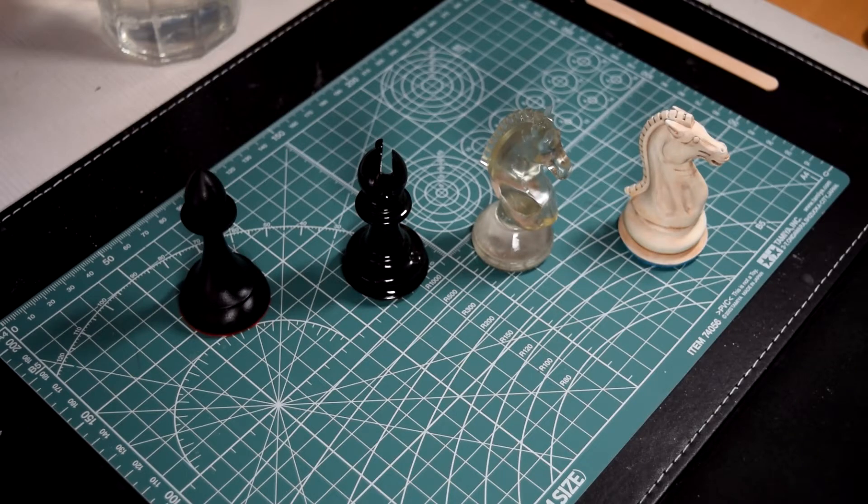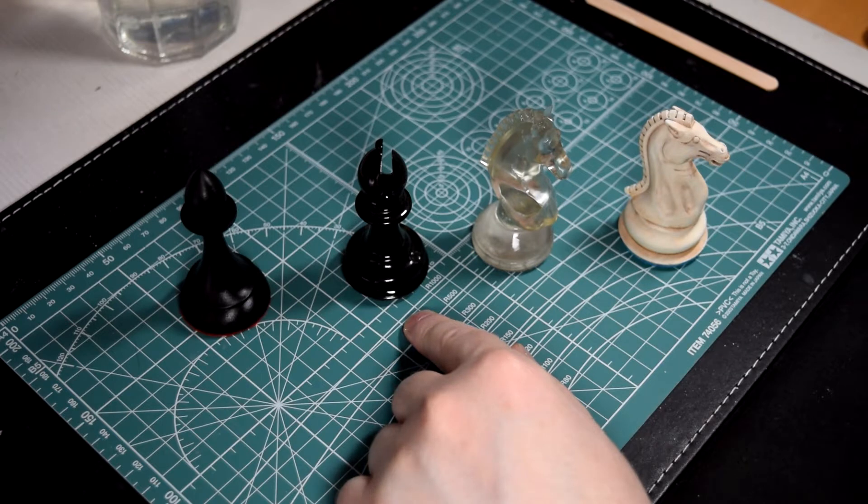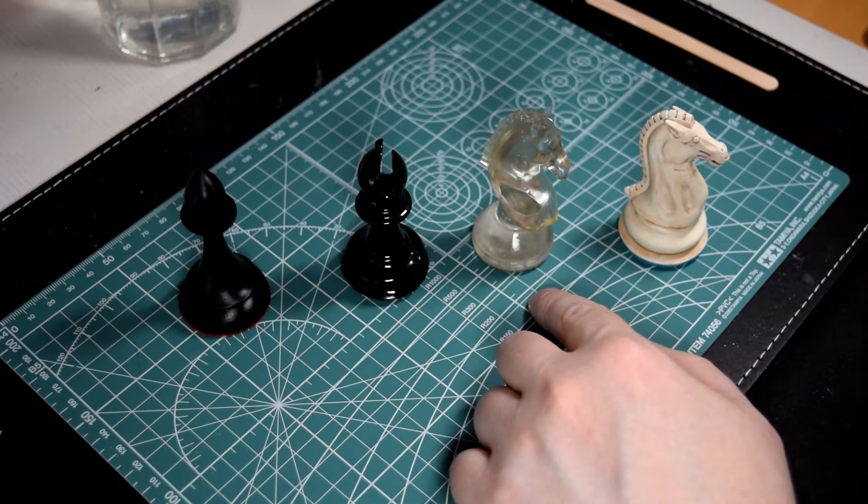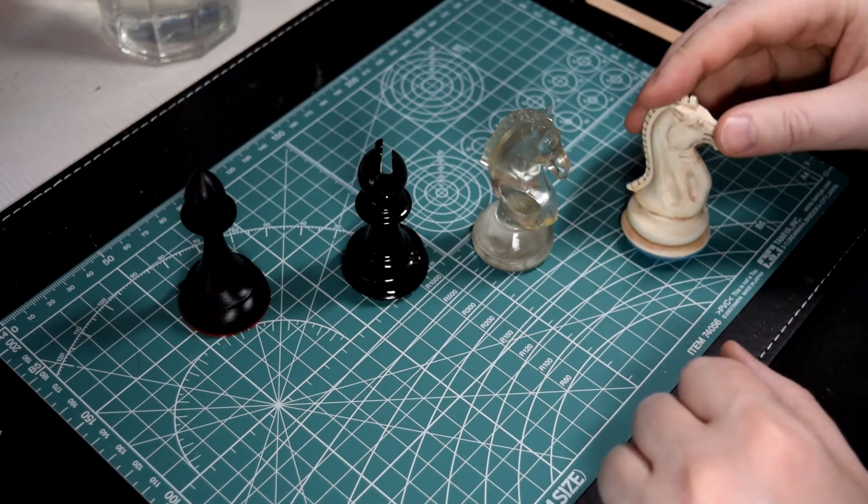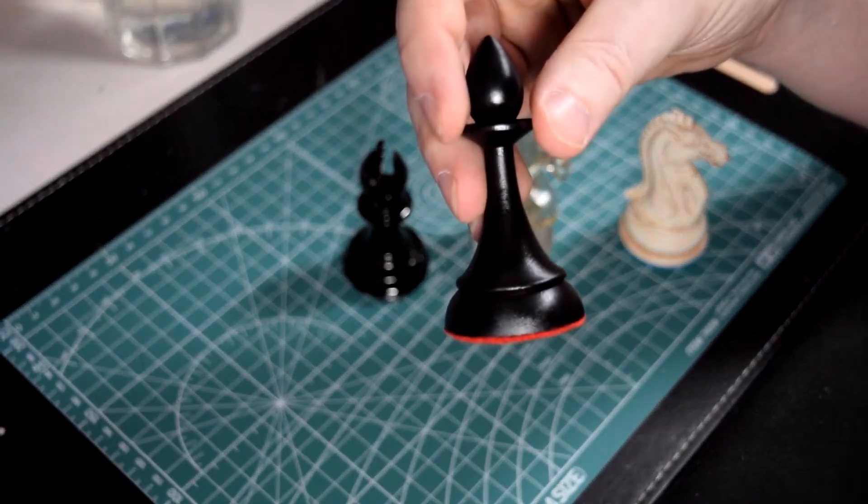There's a variety of finishes you can get on your 3D printed chess pieces, like satin black, gloss black, transparent, and bone or ivory. In this video I'm going to show you how to achieve all these different surface finishes.